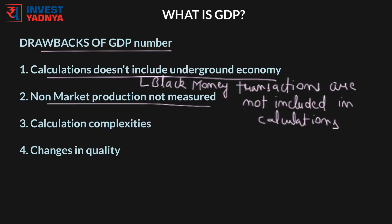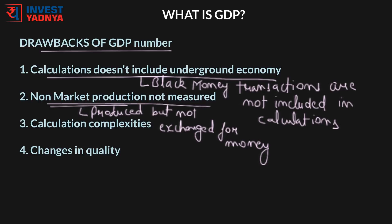Second, non-market production is not measured in GDP calculations. Goods and services produced but not exchanged for money are known as non-market production. These are not measured even though they have value. For instance, if you grow your own food, the value of that food will not be included in GDP. But if you decide to watch TV instead of growing your own food and now have to purchase it, then the value of your food will be included in GDP.